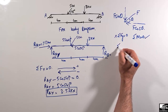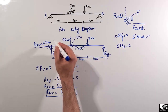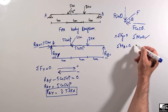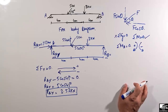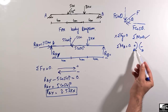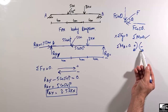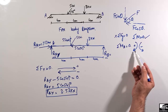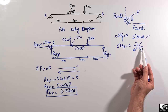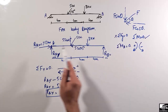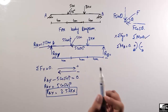Taking summation of moments about point A equal to zero. We assume clockwise moment is taken as positive and counterclockwise moment is taken as negative. This is just a sign convention; you can choose the opposite, but here clockwise is positive.